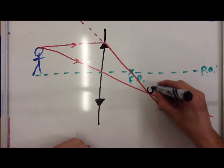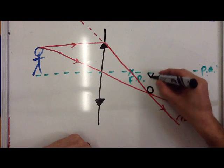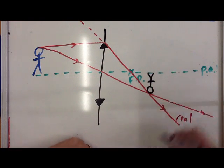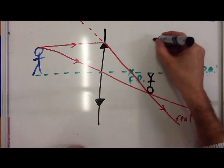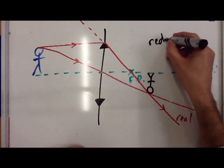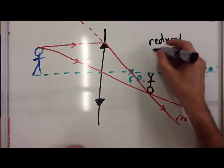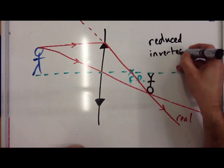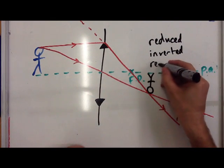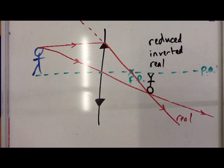The head of our person is there, which means they are upside down, their feet remain on the principal axis. Our image is reduced because it's smaller than the original. It's inverted because it's upside down. And because it's made with two real lines, the image itself is real, which means it can be projected onto something. That's the first of our converging lens diagrams. There are a few more.